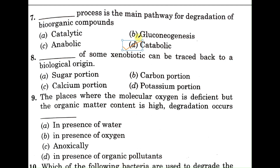Question number eight: which portion of some xenobiotic compounds can be traced back to a biological origin? Xenobiotics are compounds that are degraded only with great effort. Options: A: sugar portion, B: carbon portion, C: calcium portion, D: potassium portion. The correct answer is B, the carbon portion. Carbon can be traced using the radioactive isotope carbon-14, a method known as carbon dating.